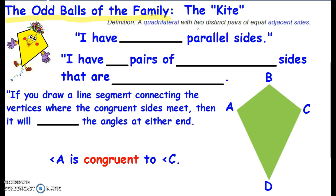The official definition is it is a quadrilateral with two distinct pairs of equal adjacent sides. Okay, so let's break that down. Here's the little quadrilateral. I have no parallel sides. So none of my sides are parallel.